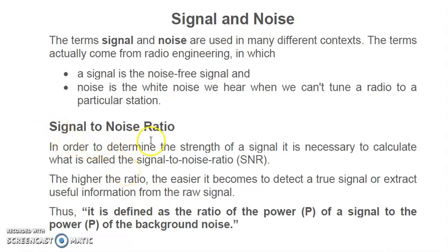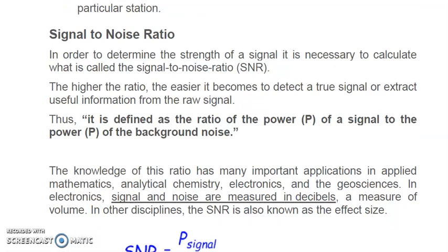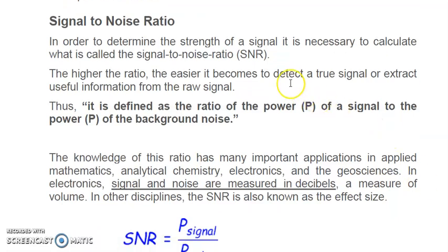In order to determine the strength of a signal, it is necessary to calculate what is called the signal to noise ratio. If we want to know the strength of the signal, we must know what signal to noise ratio means. Signal to noise ratio means signal divided by noise.